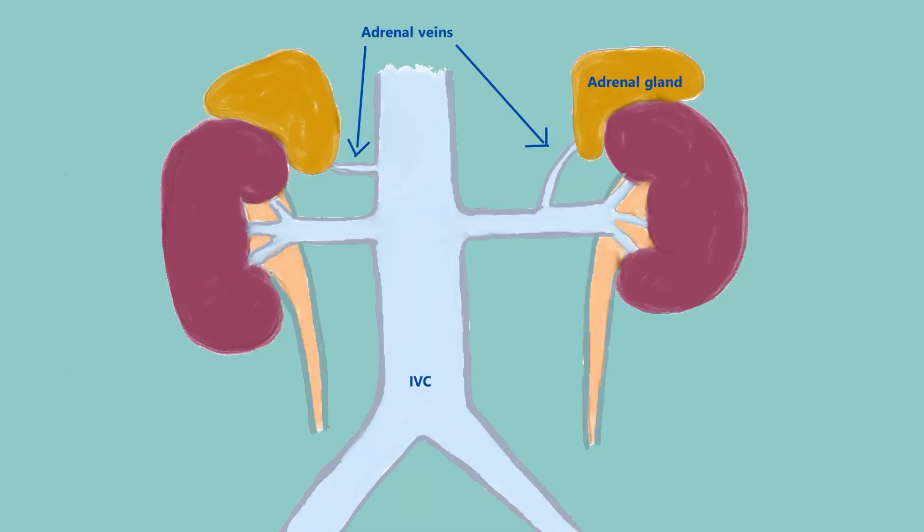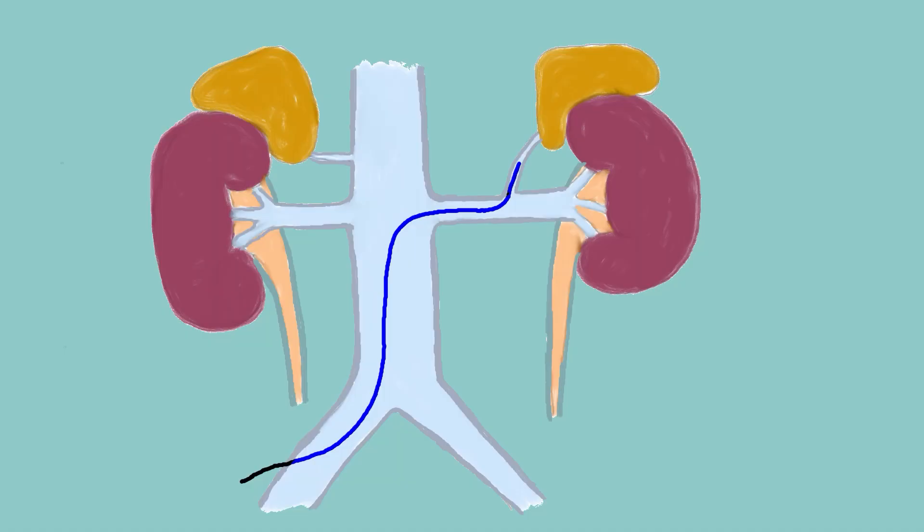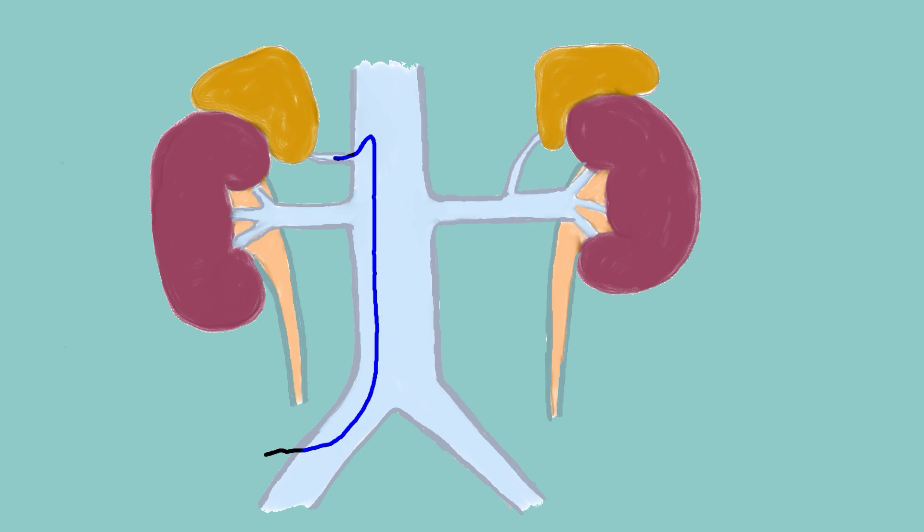The adrenal gland on each side is drained by its own respective adrenal vein. Adrenal vein sampling is a diagnostic test that involves taking blood samples directly from the veins draining the adrenal glands. This is usually done using a catheter that is inserted into the veins through the groin into each of the adrenal veins. The goal is to measure the level of hormones like aldosterone and cortisol directly from the source, which helps in pinpointing which adrenal gland might be overproducing these hormones.